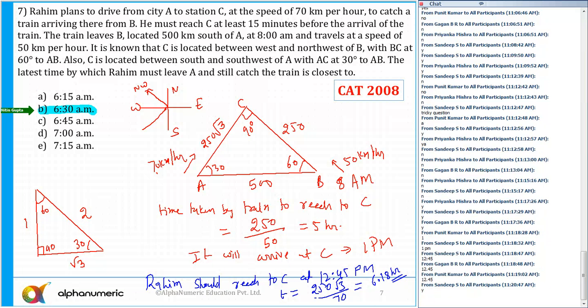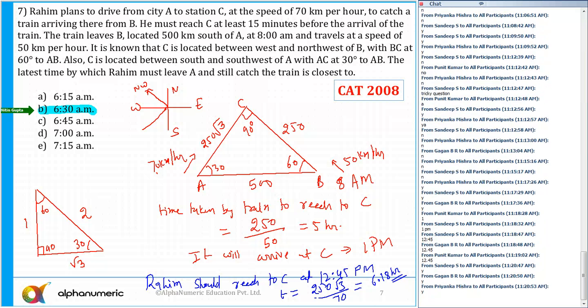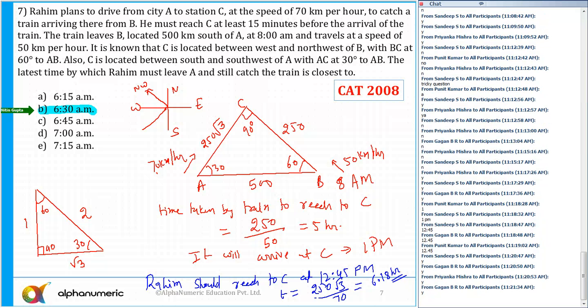Rahim must leave just a little after 6:30. From 6:45 to 12:45 is approximately 6 hours. This is also a difficult question. You must have observed in today's session and the last couple of sessions that a lot of questions have mixed problems in speed, distance, and time with geometry.